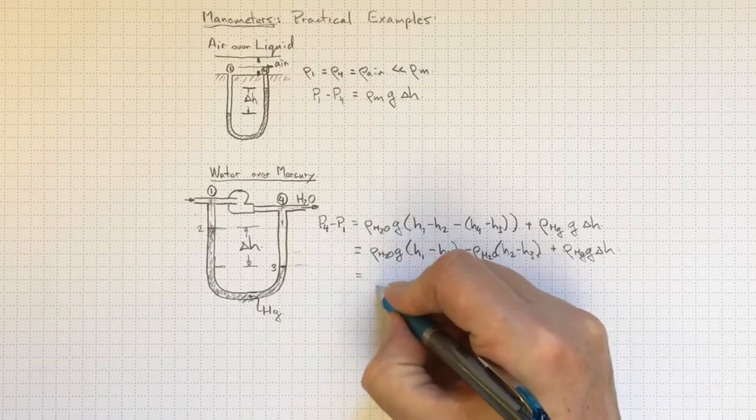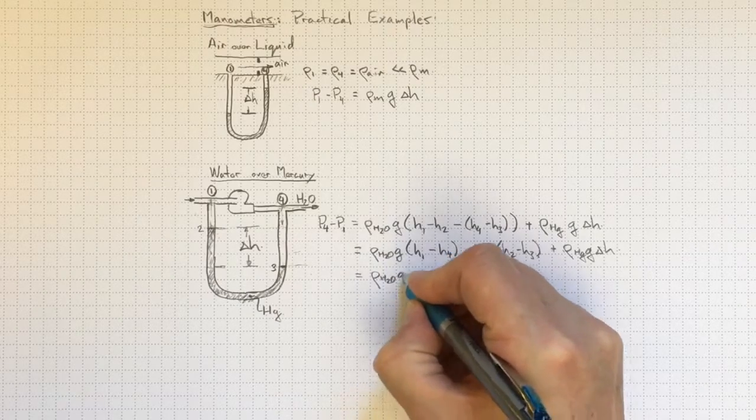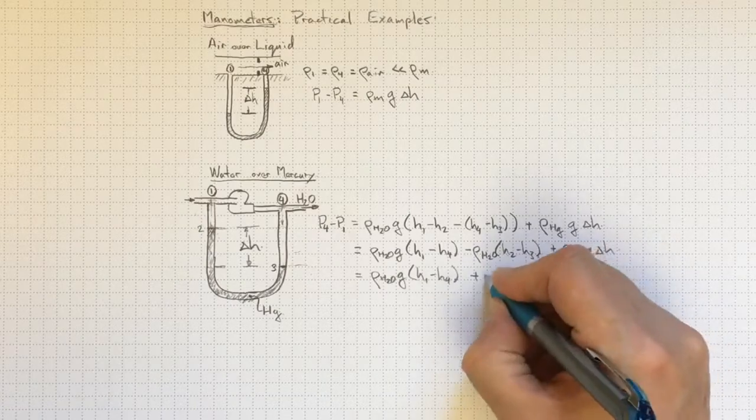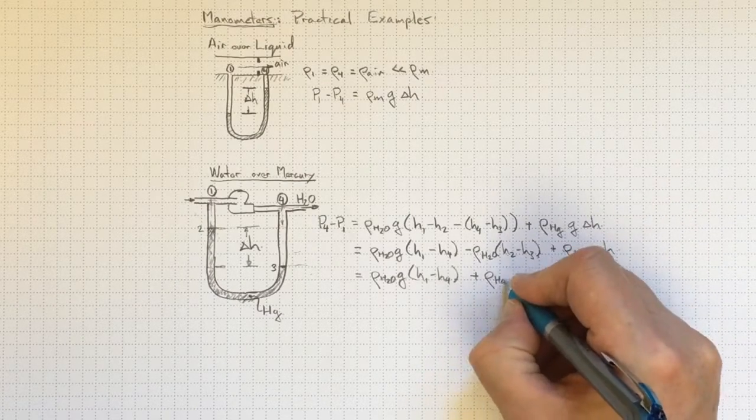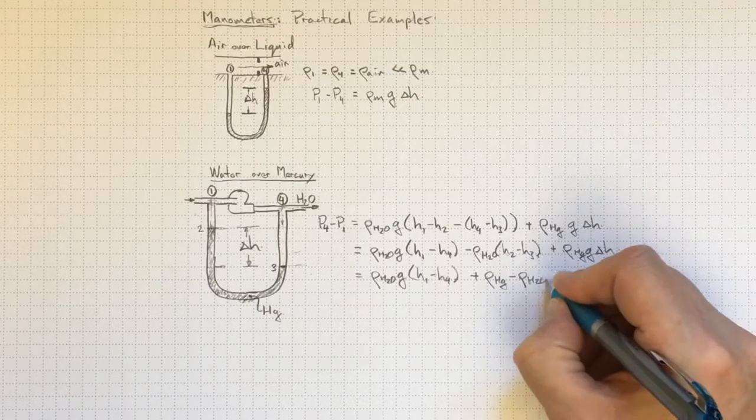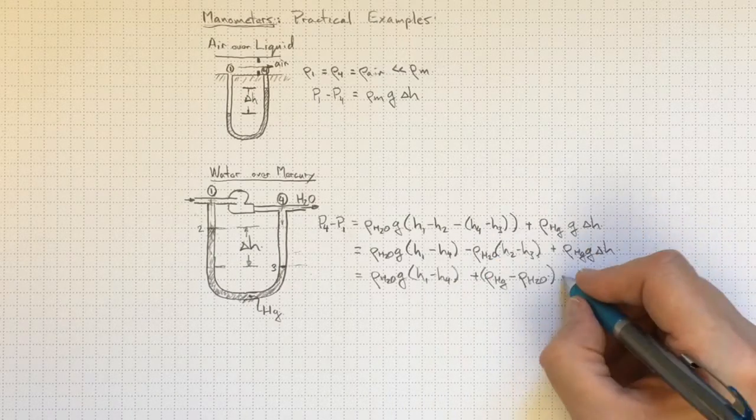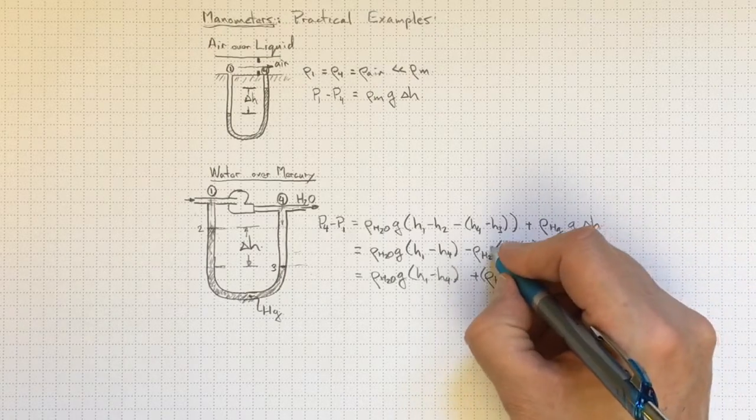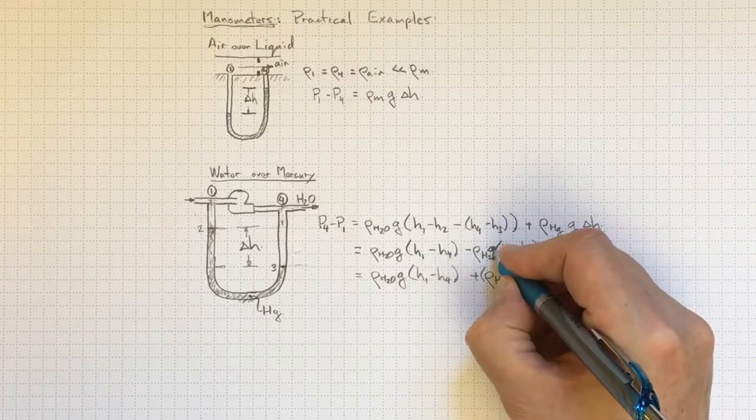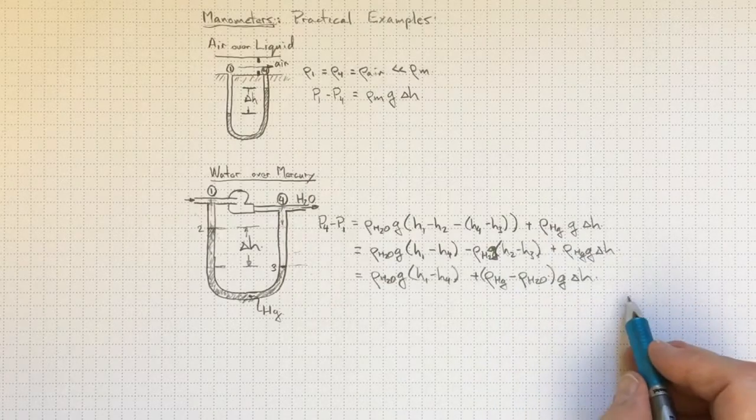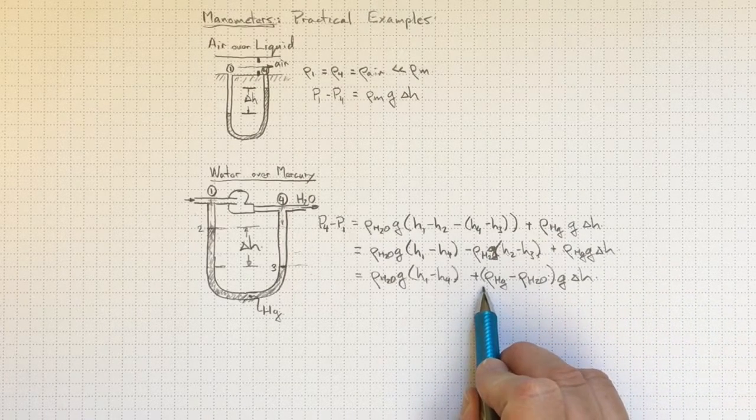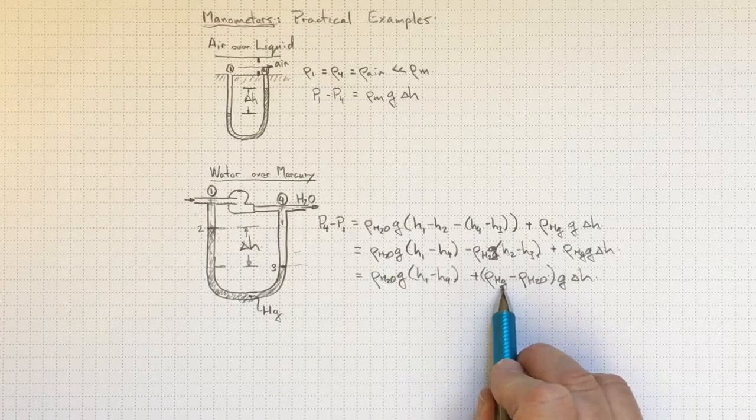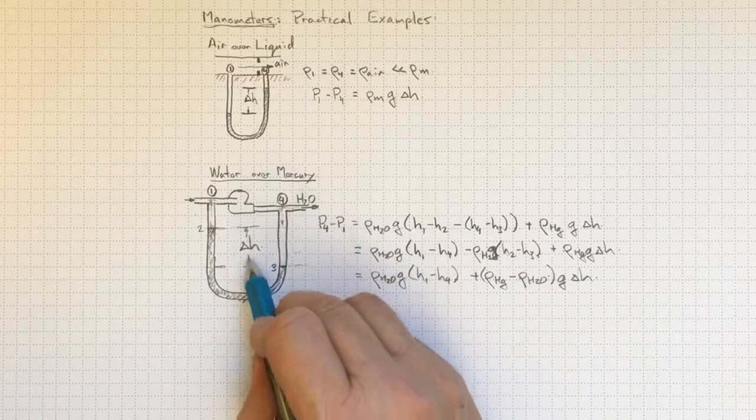So we'll wind up with rho H2O times G times H1 minus H4 plus rho HG minus rho H2O times G delta H. And I see I forgot to put the G in up here. Rho H2O times G would go in there. So the big term is going to come from the difference in the densities between water and mercury and the difference in height between the levels of the mercury here.